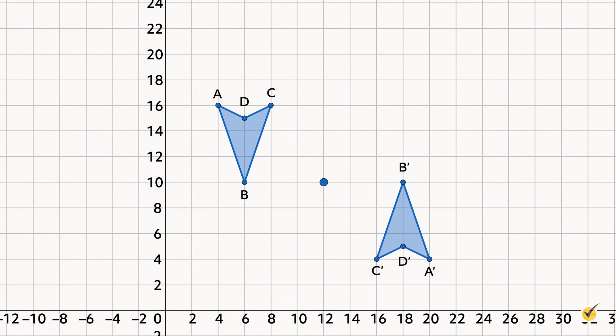The properties of reflections in points are very similar to those of reflections over lines. The pre-image and image are congruent, but the image is a 180 degree rotation of the pre-image. All corresponding points on the pre-image and image are the same, but opposite, distance from the point of reflection. And the point of reflection is the midpoint of all segments connecting corresponding points of the pre-image and image.